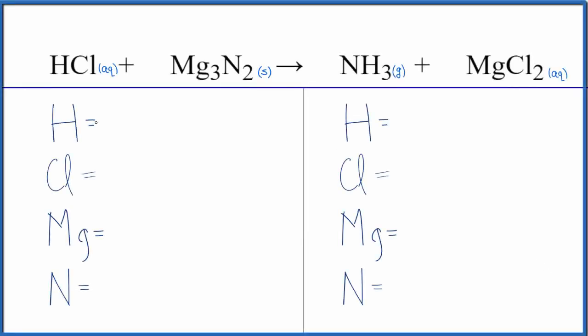In this video, we'll write the balanced equation for HCl plus Mg3N2. This is hydrochloric acid.